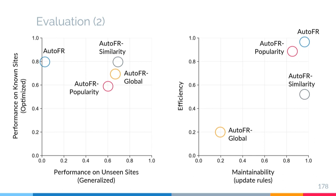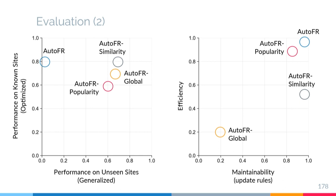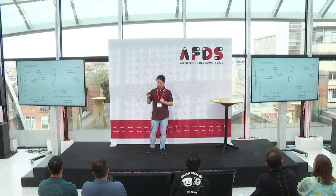AutoFR is the fastest, taking a few minutes per site, and if we want to run it for an unseen site, we simply run AutoFR for that individual site. AutoFR Global was found to be quite slow — it may take hours and linearly scales with our input — and it has very bad maintainability because adding an unseen site requires running the whole thing again.